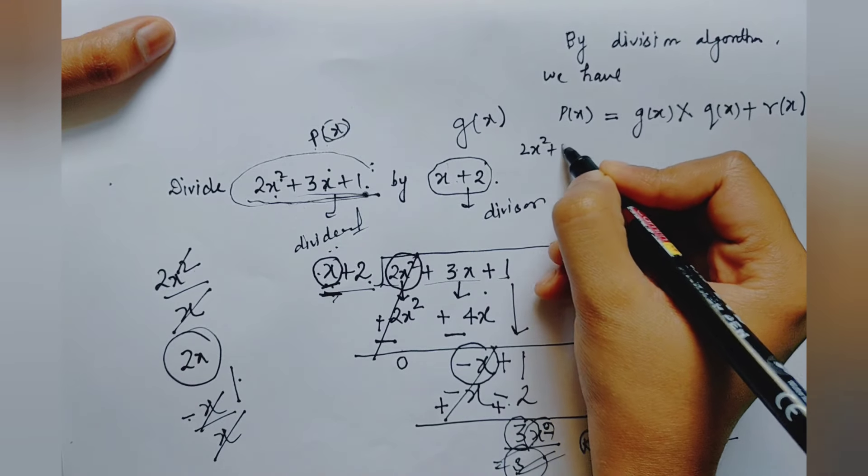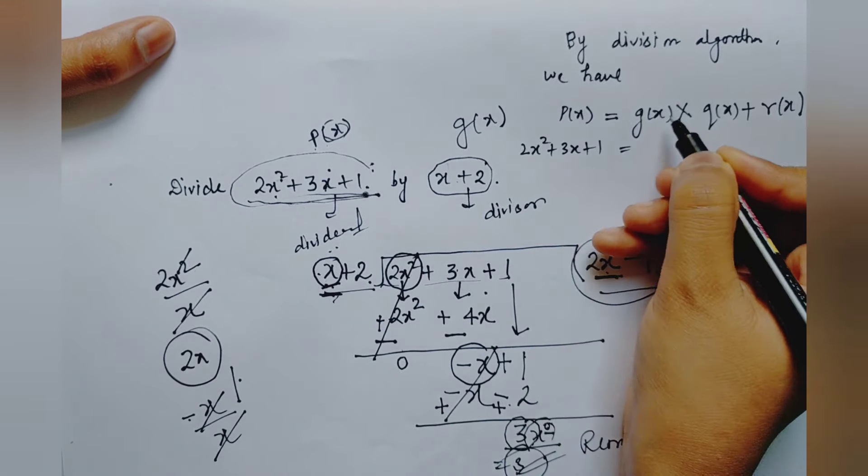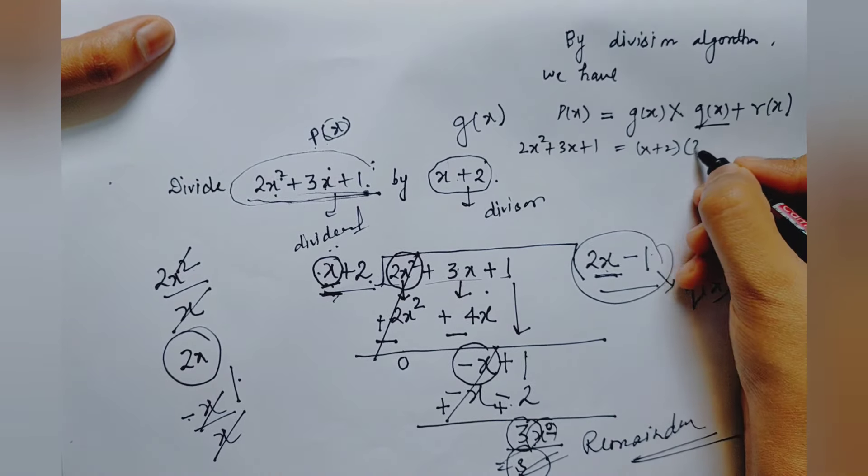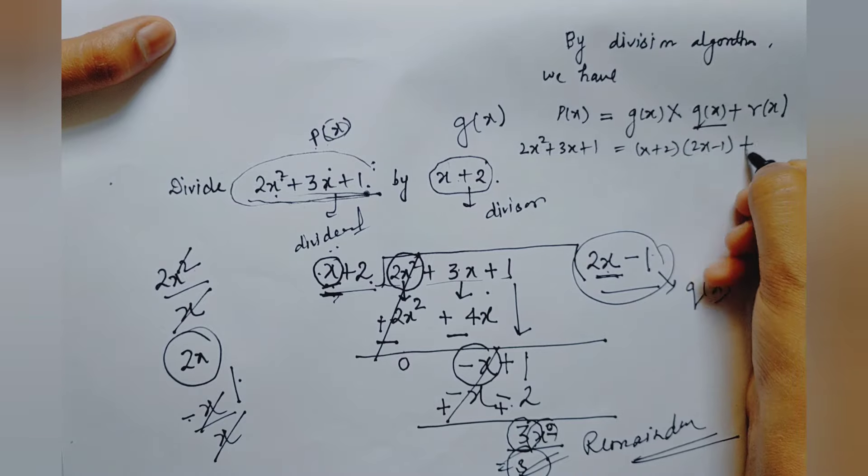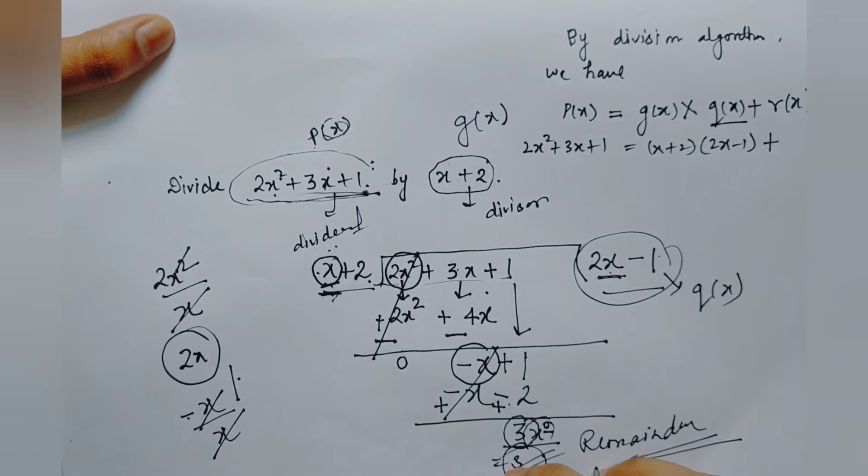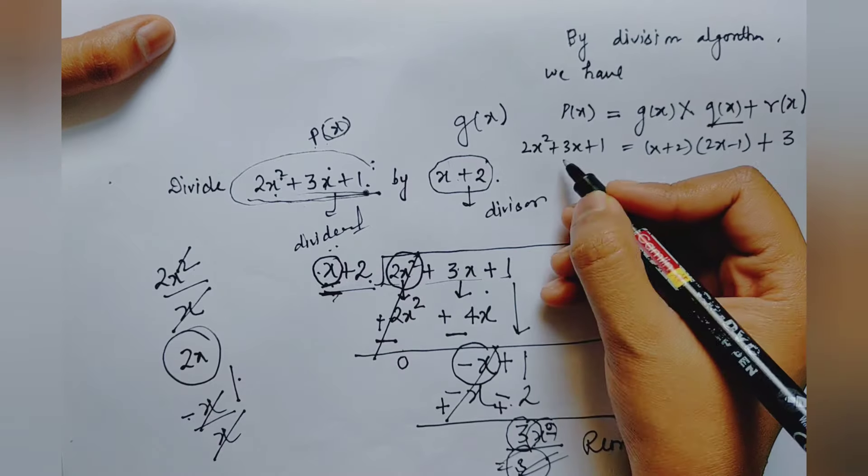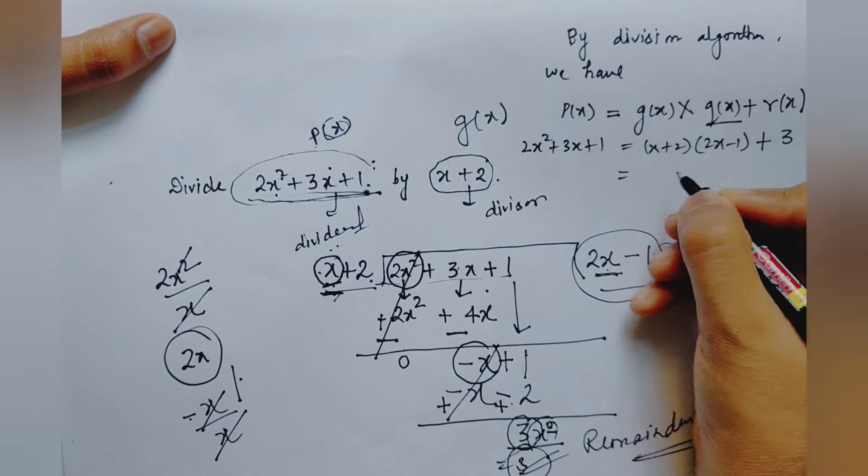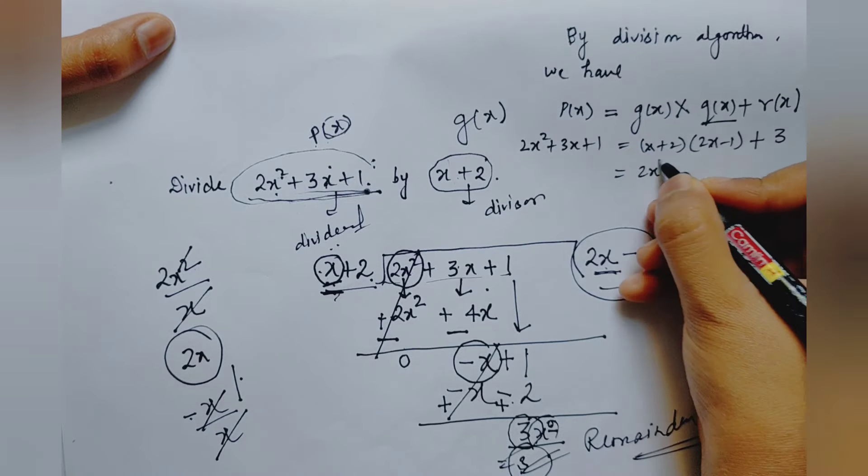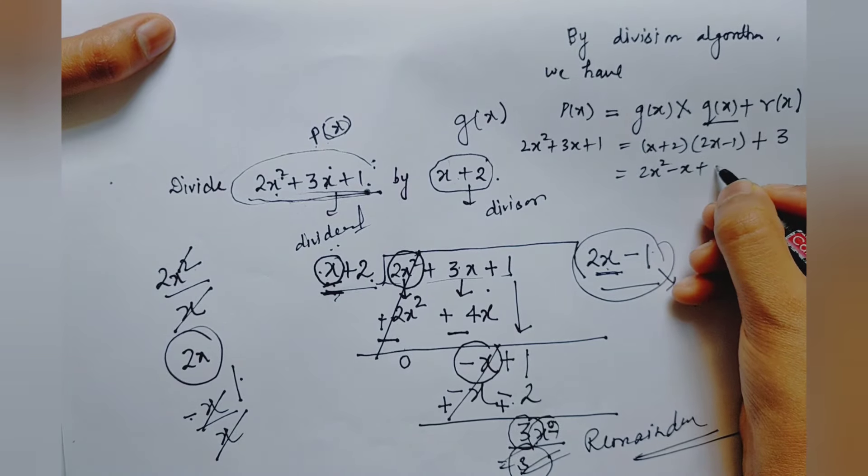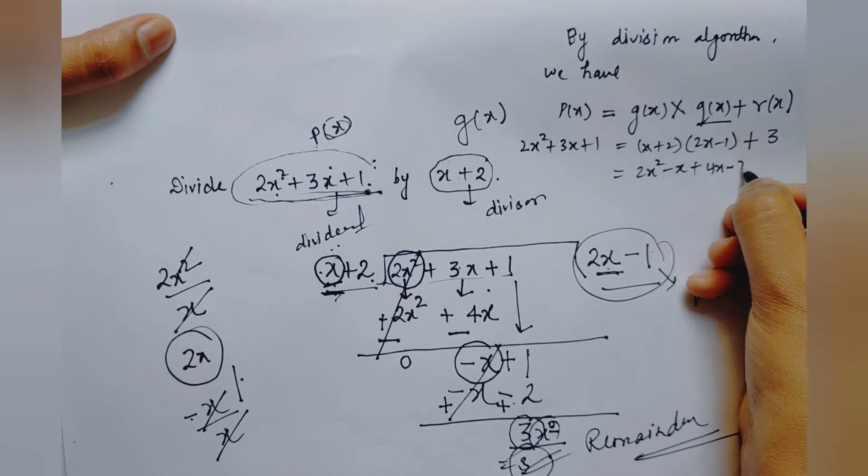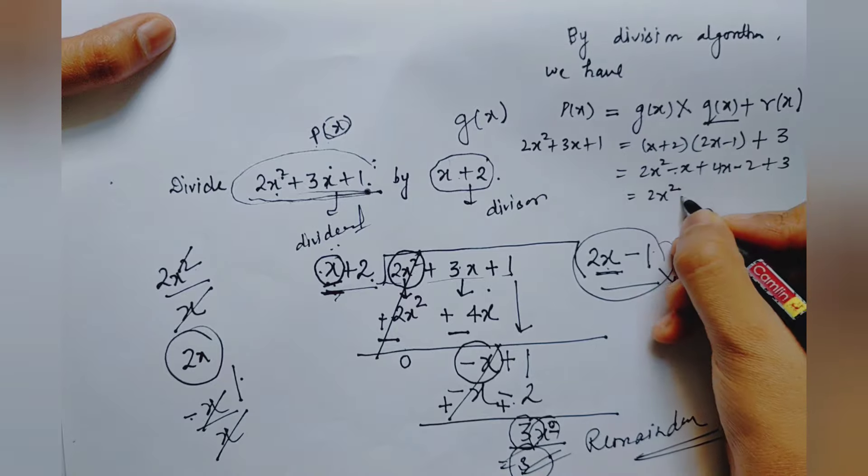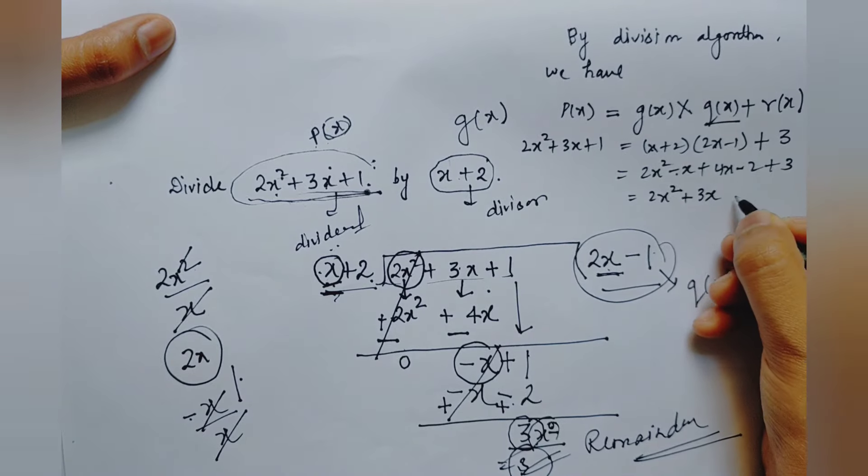P(x) is already given as 2x squared plus 3x plus 1, which equals g(x) means x plus 2, in multiplication with q(x) means 2x minus 1, plus r(x) which is remainder 3. I will prove left side equals right side. Let's multiply: 2x squared minus x plus 4x minus 2 plus 3.